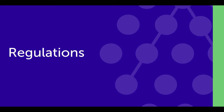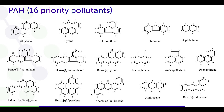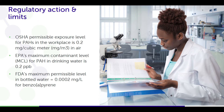Let's talk a bit about regulations. The EPA has identified 16 priority pollutants of the PAHs, which are unusually bad actors, and here they are. The OSHA permissible limit is 0.2 milligrams per cubic meter in air, and 0.2 parts per billion of PAHs in drinking water. For one of the particular priority pollutants, 0.2 micrograms per liter for benzo-alpha-pyrene. So these are pretty low limits.